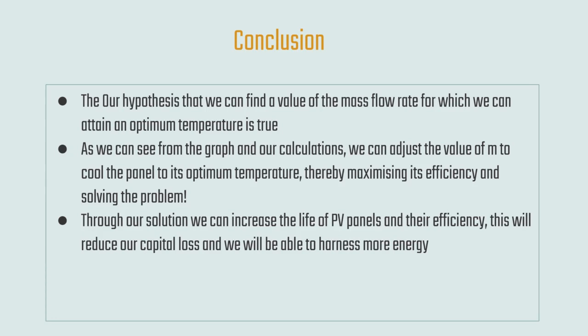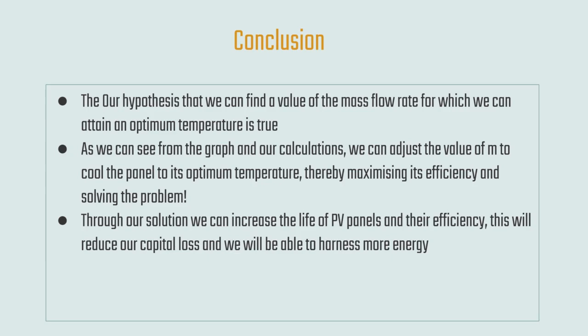Our hypothesis — that we can find a mass flow rate to attain an optimum temperature — turns out to be true, as confirmed by the graph and calculations. We can now adjust the value of ṁ to cool the panel to its optimum temperature, thereby maximizing efficiency. Through our solution, we can increase the life of PV cells and their efficiency, reduce capital loss, harness more energy, and propose a simple design modification in photovoltaic cells that will help gain much more energy from them.